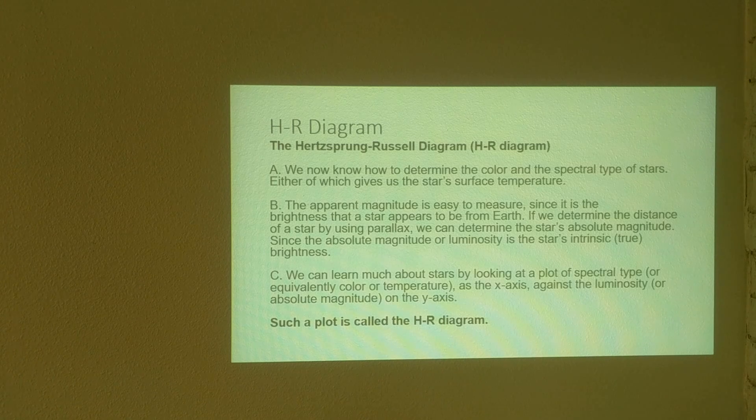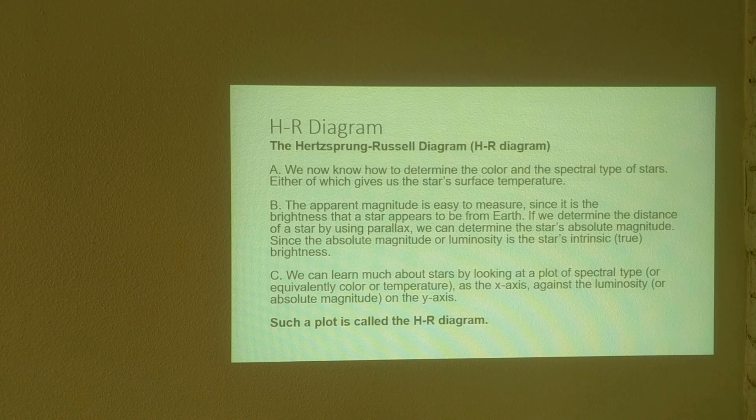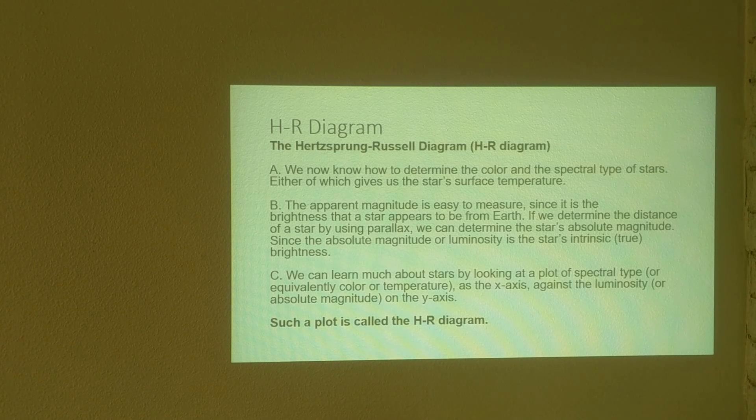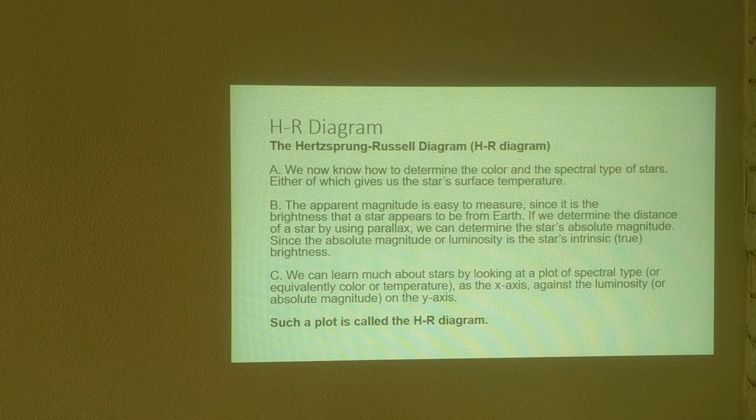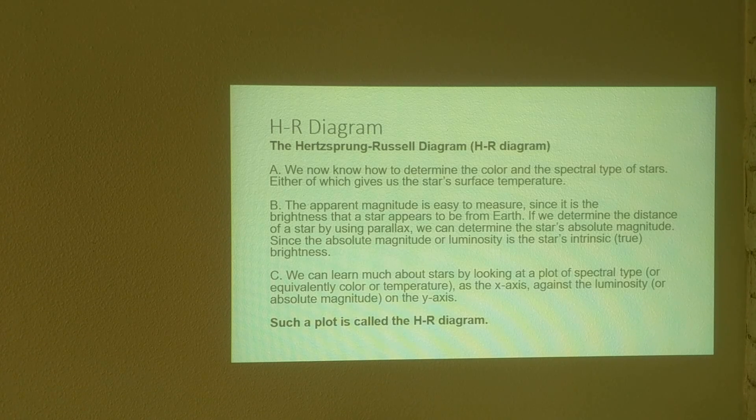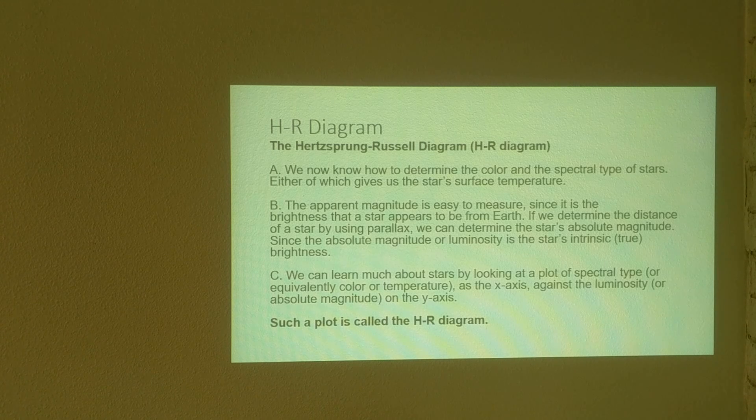The apparent magnitude, that's defined as the brightness that a star appears to be from Earth. Just as in the sky, as in a particular night, we look up and we see some stars are brighter than others. So some stars have a brighter apparent magnitude than other stars. If we determine the distance of a star using parallax, which can be done for nearby stars, we can determine the star's absolute magnitude.